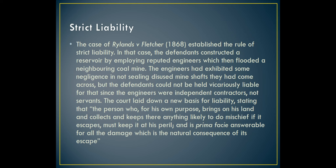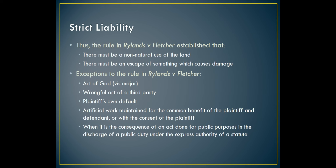The court laid down a new basis for liability: the person who for his own purpose brings onto his land and collects and keeps there anything likely to do mischief if it escapes must keep it at his peril and is prima facie answerable for all damage which is the natural consequence of its escape. The rule in Rylands versus Fletcher established that there must be a non-natural use of the land and there must be an escape of something which causes damage. Exceptions to the rule include: act of God, wrongful act of a third party, plaintiff's own default, artificial work maintained for common benefit of both parties or with the plaintiff's consent, and acts done for public purposes under express authority of a statute.